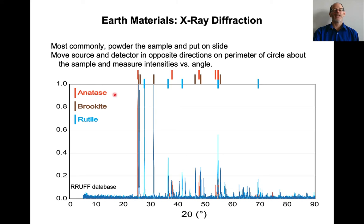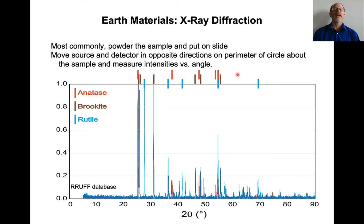Here, from the RRUFF database: anatase is orange, brookite is brown, rutile is blue. Looking at the most intense peaks — the blue peaks are rutile, brown peaks are brookite, and orange peaks are anatase. You can see some peaks kind of line up and there's some similarity, but there are no blue peaks in certain regions, and nothing in the orange and brown peak regions for rutile. It turns out that even minerals with the same composition — even in the same crystal system — can have very different x-ray diffraction patterns. Even if you knew the chemistry TiO₂, you wouldn't necessarily know what mineral it is. But the x-ray diffraction pattern would tell you whether it's anatase, brookite, or rutile.